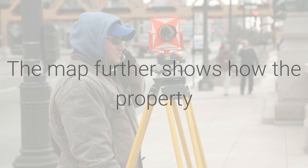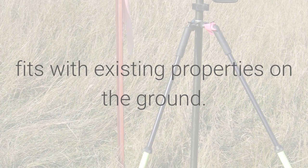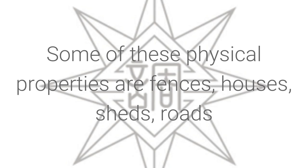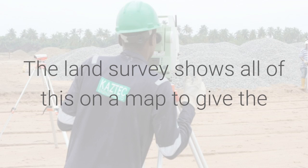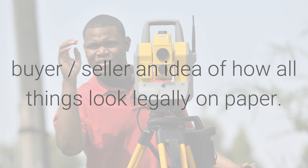The map further shows how the property fits with existing properties on the ground. Some of these physical properties are fences and houses, sheds, roads, and more. The land survey shows all of this on a map to give the buyer and seller an idea of how all things look legally on paper.